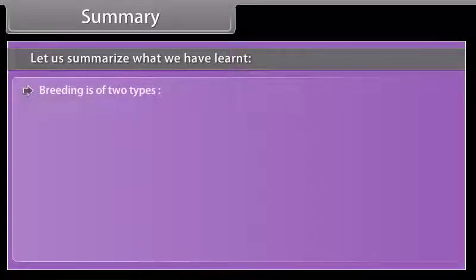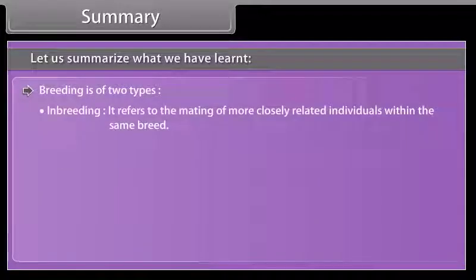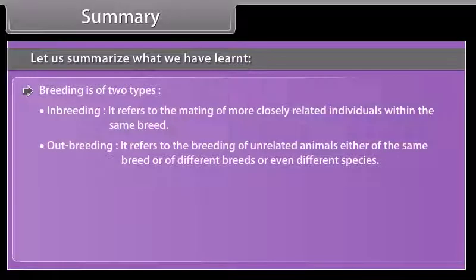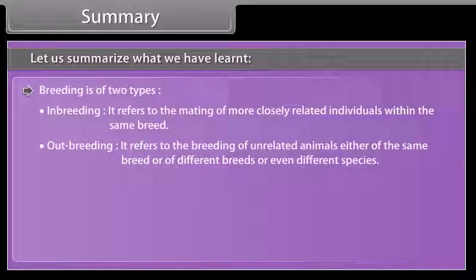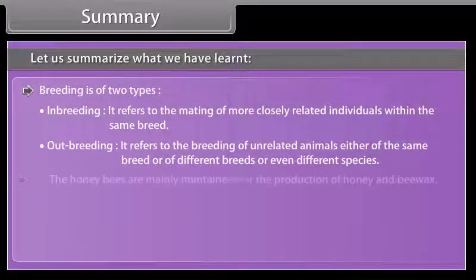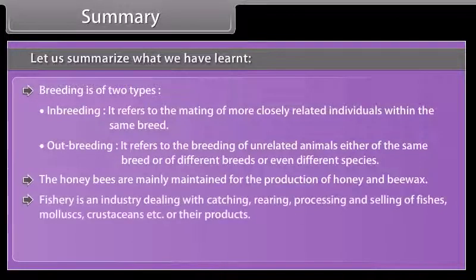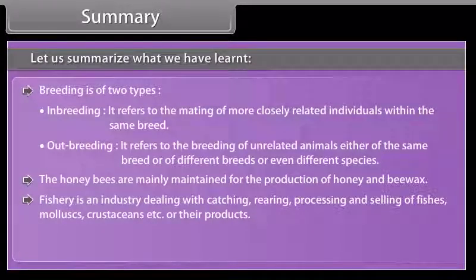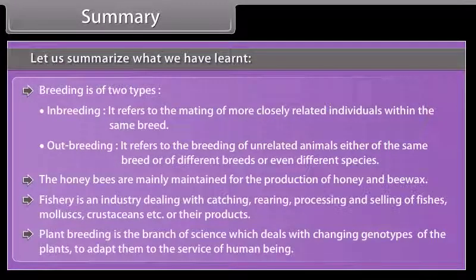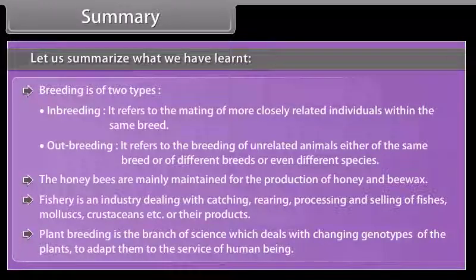Breeding is of two types: inbreeding, which refers to the mating of more closely related individuals within the same breed, and outbreeding, which refers to the breeding of unrelated animals of the same breed, different breeds, or even different species. Honeybees are mainly maintained for the production of honey and beeswax. Fisheries is an industry dealing with catching, rearing, processing, and selling of fishes, mollusks, crustaceans, etc. Plant breeding is the branch of science which deals with changing genotypes of plants to adapt them to the service of human beings.